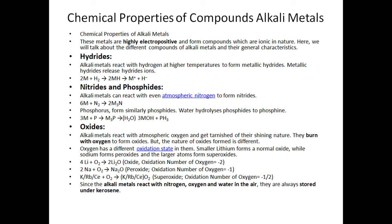Oxides are formed when alkali metals burn with oxygen, but the nature of the oxide differs by element. Some form simple oxides, some form peroxides, and the lower elements form superoxides. Lithium forms normal oxide (Li₂O) with oxygen oxidation number −2. Sodium forms peroxide with oxidation number −1. Potassium, rubidium, and cesium form superoxides with oxygen oxidation number −½.